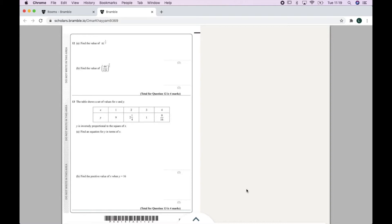So let's look at this maths paper as an example. When you upload a file to Bramble, we make it as big as possible whilst maintaining its aspect ratio and ensuring it all fits on the page.